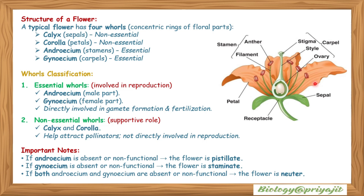Sepals or calyx hold the other whorls in the plant. The third whorl is the androecium, which consists of stamens — the essential male reproductive part. The fourth whorl is the gynoecium, made up of carpels, which is the essential female reproductive part. Non-essential parts — calyx and corolla — provide a supportive role and help attract pollinators but are not directly involved in reproduction.